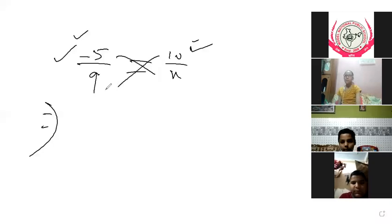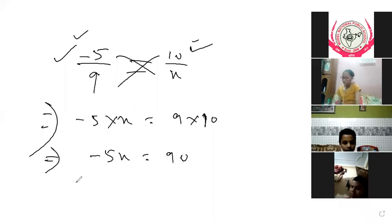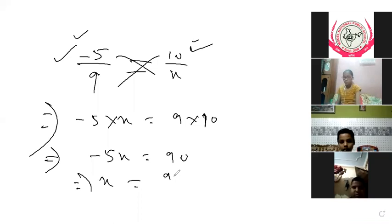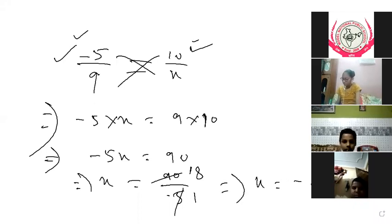We cross multiply: minus 5 into x equals 9 into 10. So minus 5x equals 90. Dividing both sides by minus 5, x is equal to minus 18.